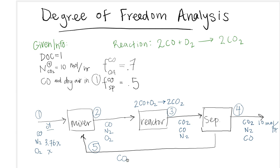So first, the given information that we have is a degree of completion of one. We have a flow rate for the outlet stream of carbon dioxide of 10 moles an hour. We also know the components of the inlet stream being carbon monoxide and dry air. We're also given fractional conversions for single pass and overall system.